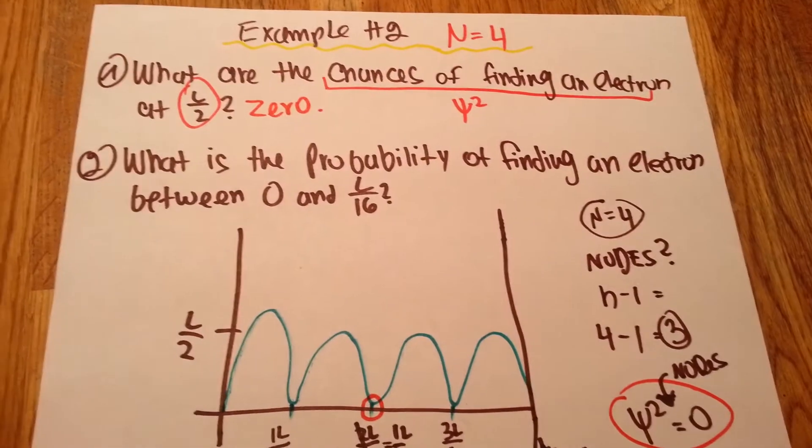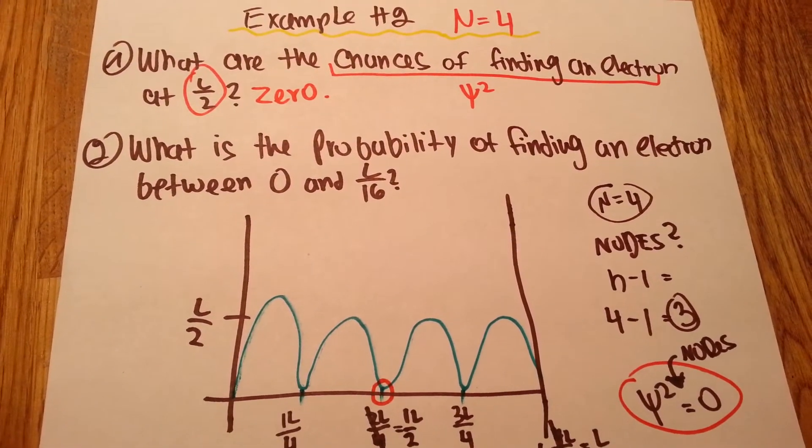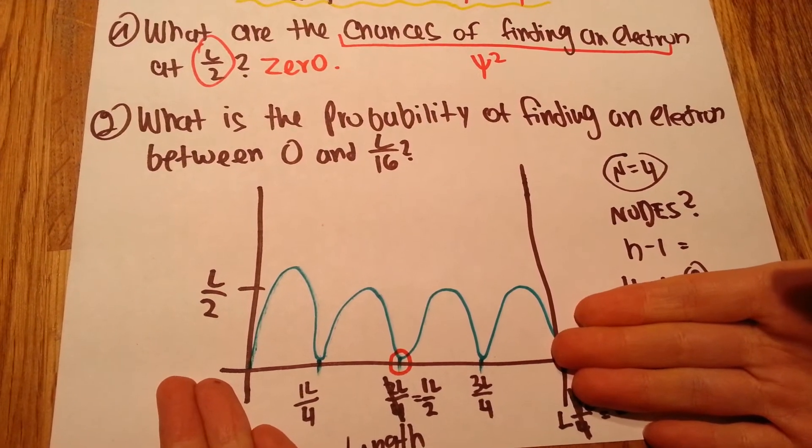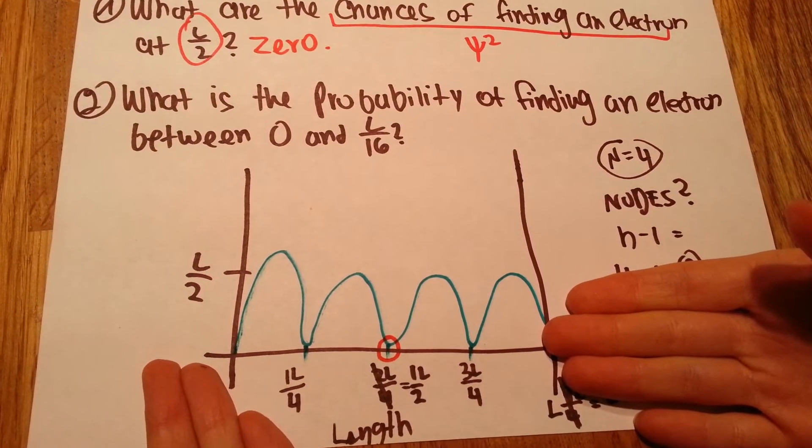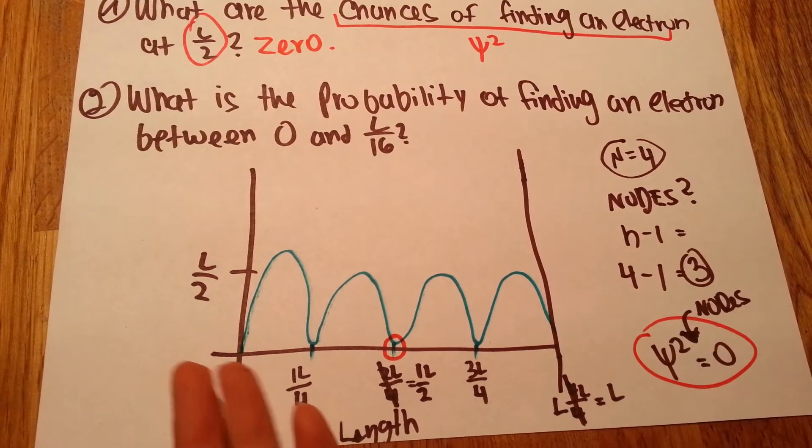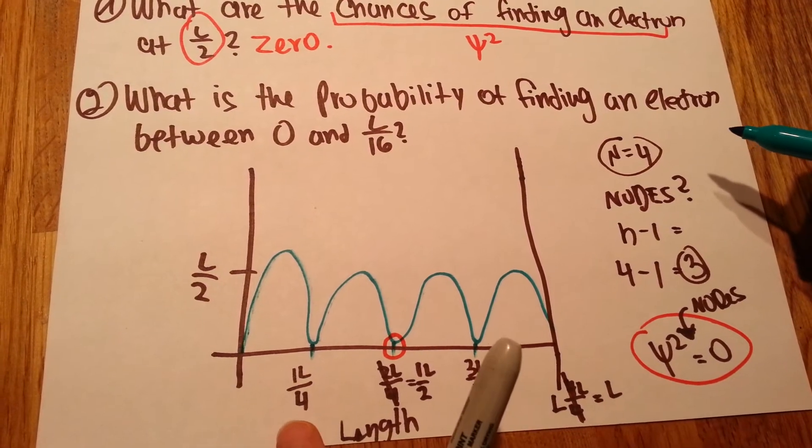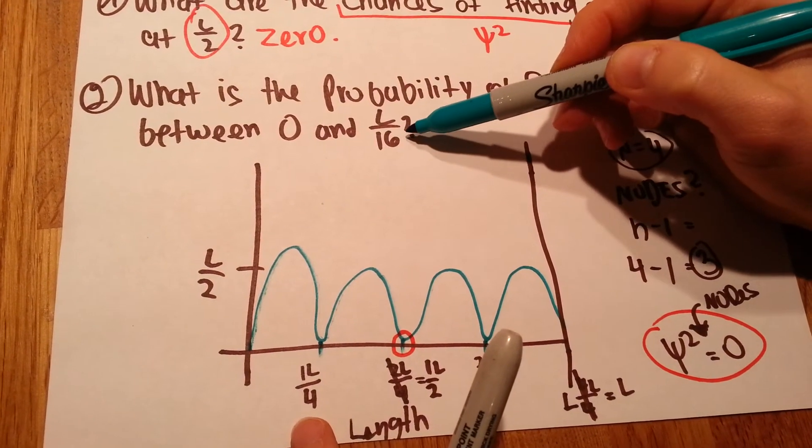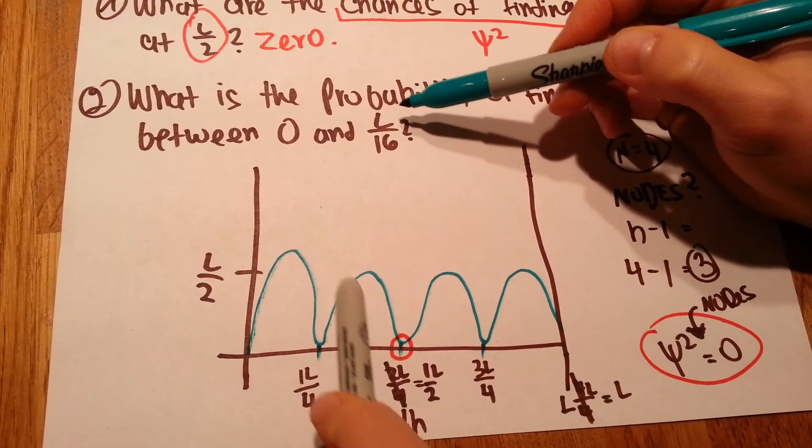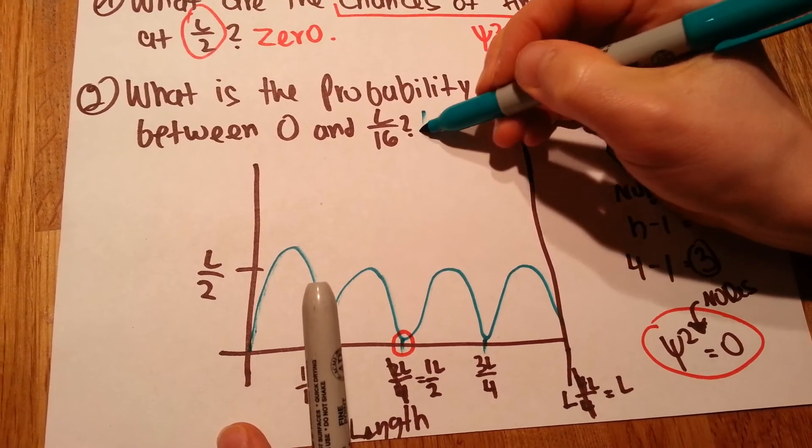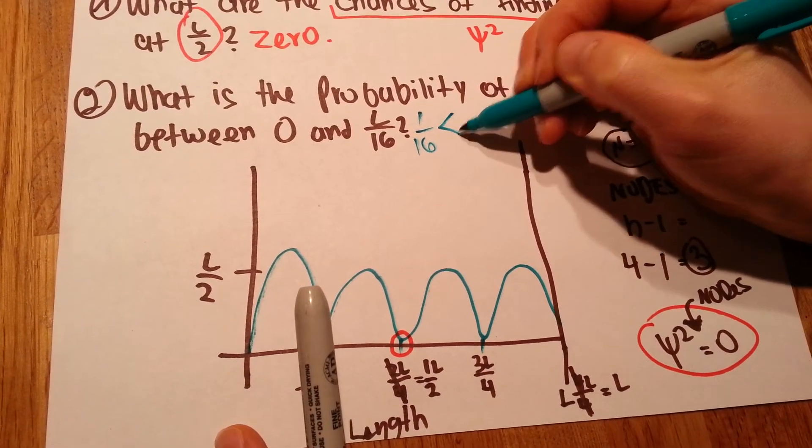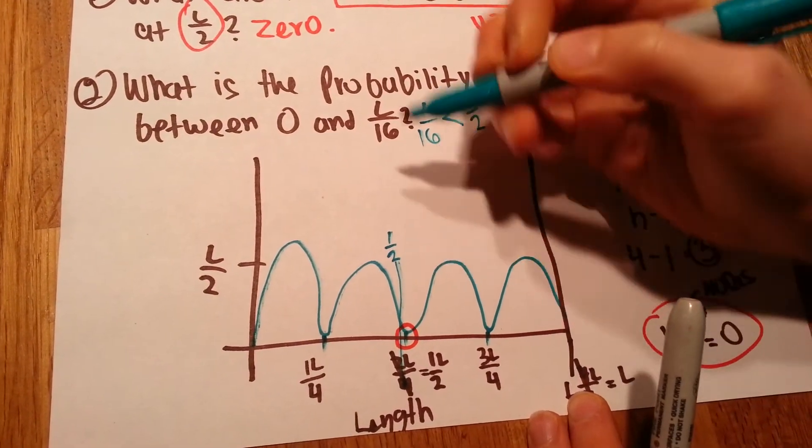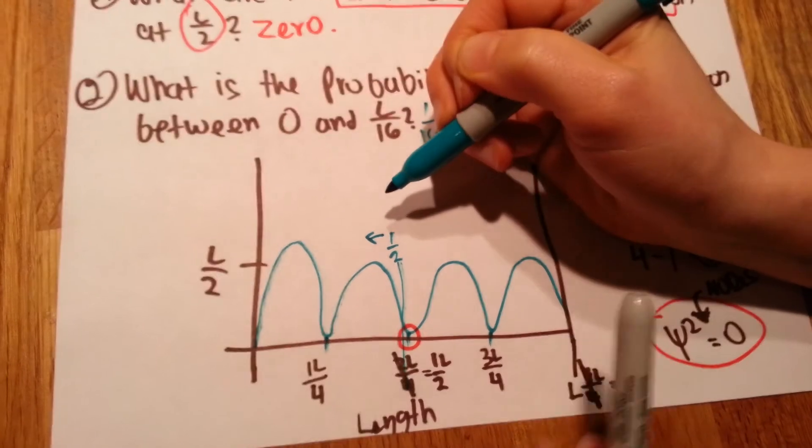Now, the second question: what is the probability of finding an electron between 0 and L divided by 16? Again, we can't find L divided by 16 in this graph. But if we utilize some basic math, we can figure out what is L over 16. L over 16 is going to be a small number, so we know it's going to be somewhere in here. 1 over 16 is smaller than half, right? And this is half. So we know it's going to be to the left of here.